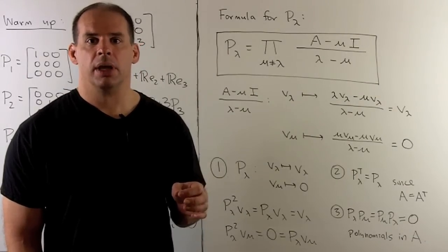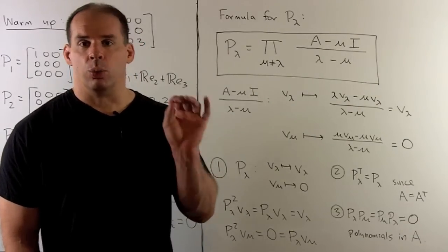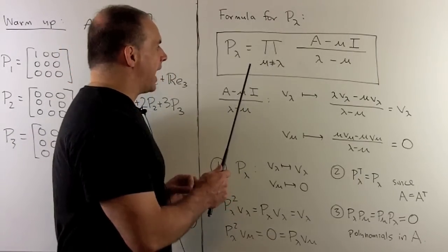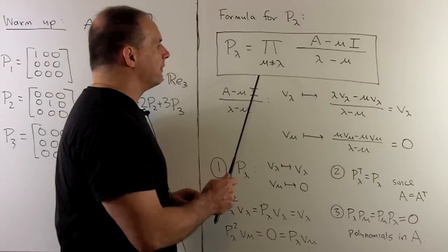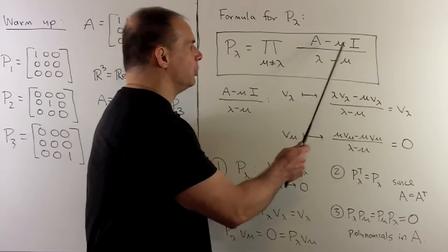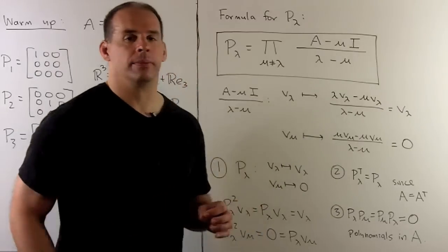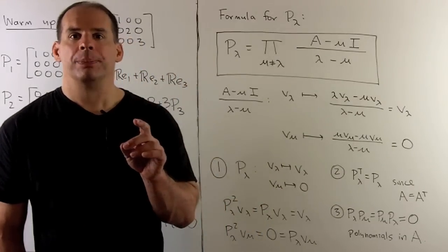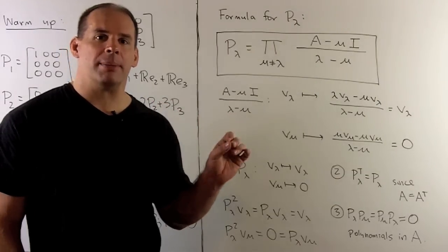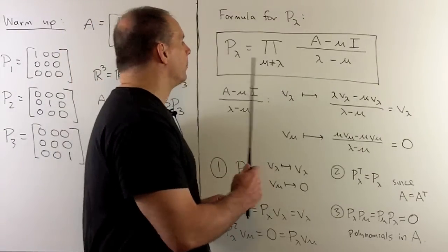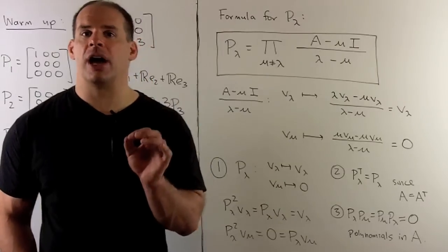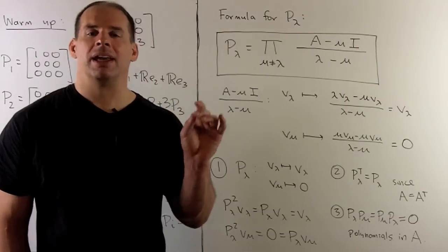In general, how do we get our projection operators? We have a formula. P sub lambda is defined as the product over all eigenvalues mu not equal to lambda of (A minus mu·I) divided by (lambda minus mu). In the numerator we have a matrix — a linear combination of A and the identity matrix — and in the denominator we have a scalar. So P sub lambda is just a polynomial in A: a linear combination of powers of A and the identity matrix.